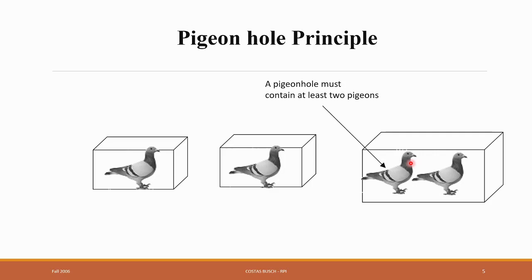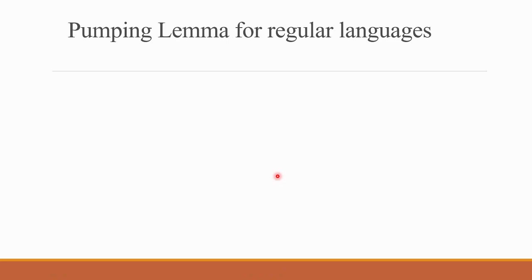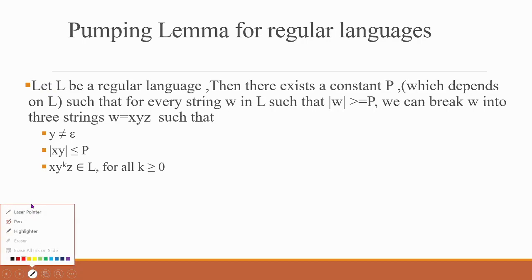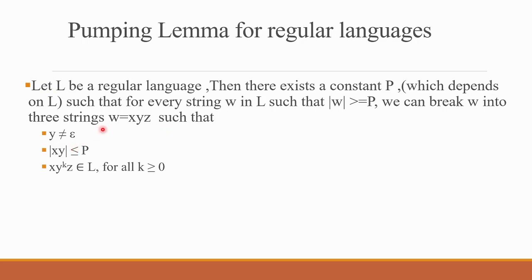Next, let's look at the Pumping Lemma definition. Let L be a regular language. Then there exists a constant p, which depends on L, such that for every string w in L with |w| greater than or equal to p, we can break w into three strings: w = xyz, such that y is not equal to epsilon, |xy| is less than or equal to p, and xy^k z is an element of L for all k greater than or equal to 0.